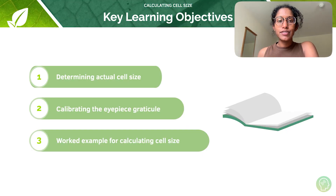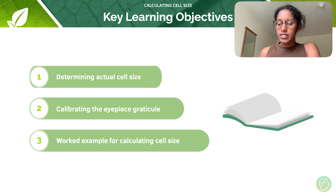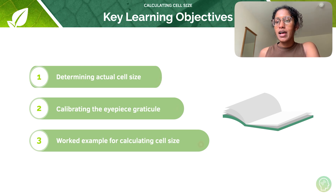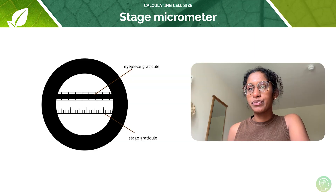We have three key learning objectives for this tutorial. Number one: determining actual cell size. Number two: calibrating the eyepiece graticule. And number three: a worked example.